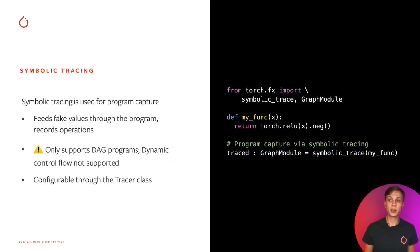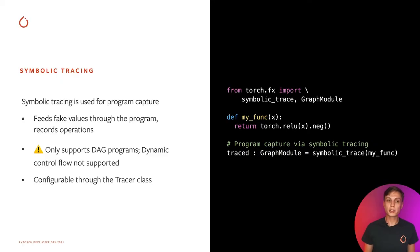Torch.fx uses a technique called symbolic tracing to capture the program. It feeds fake values through the program and records the operations that happen on those fake values. You can see in the code example to the right that the fx.symbolic_trace API exposes this functionality — just pass in a function or module to this API and fx will capture it using symbolic tracing. Note that symbolic tracing only supports DAG programs; dynamic control flow such as loops or if statements that depend on dynamic values are not supported. Neural networks are most often DAG programs, so we find this is a reasonable tradeoff, as it simplifies the graph representation for transformation purposes. Nevertheless, symbolic tracing is configurable via the tracer class — a custom tracer can be used to specify the level of representation of the capture, or leave untraceable parts of the program as opaque calls.